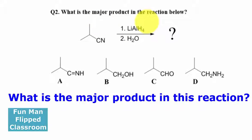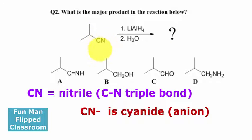What is the major product in the reaction below? Now when you draw this out, this is actually a nitrile, CN triple bond.